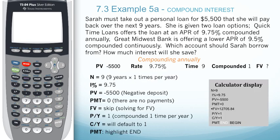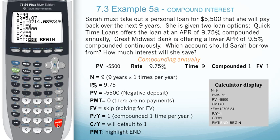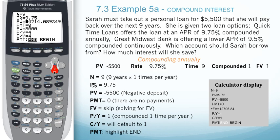Let's take a look at how to enter this into the TVM solver. Hit the Apps button, then hit Enter for Finance, and Enter for TVM solver. In this example, N will be the number of years, which is nine, times the number of compounding periods, which is one. So that gives us nine. The interest rate is 9.75%. The present value in this case is $5,500.